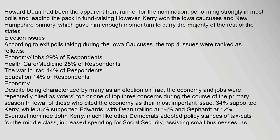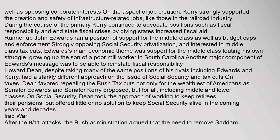Eventual nominee John Kerry, much like other Democrats, adopted policy stances of tax cuts for the middle class, increased spending for Social Security, assisting small businesses, and opposing corporate interests. On job creation, Kerry strongly supported infrastructure-related jobs, like those in the railroad industry. Runner-up John Edwards ran on support for the middle class, budget caps, and strongly opposing Social Security privatization. Edwards's main economic theme touted his own struggle growing up the son of a poor mill worker in South Carolina.